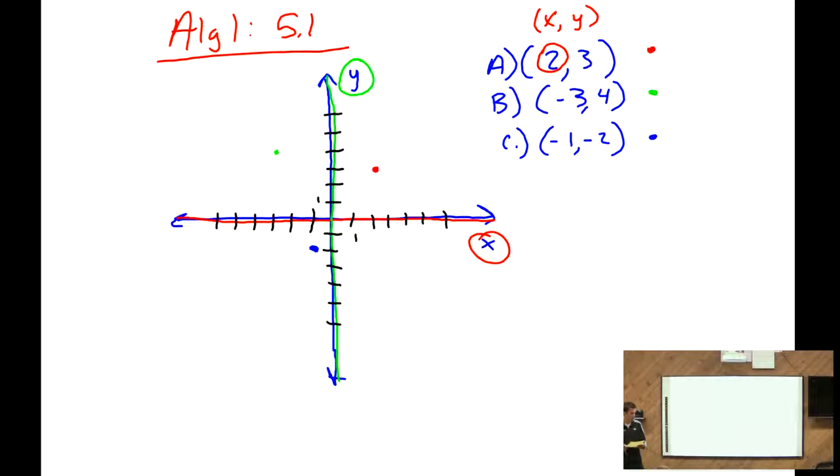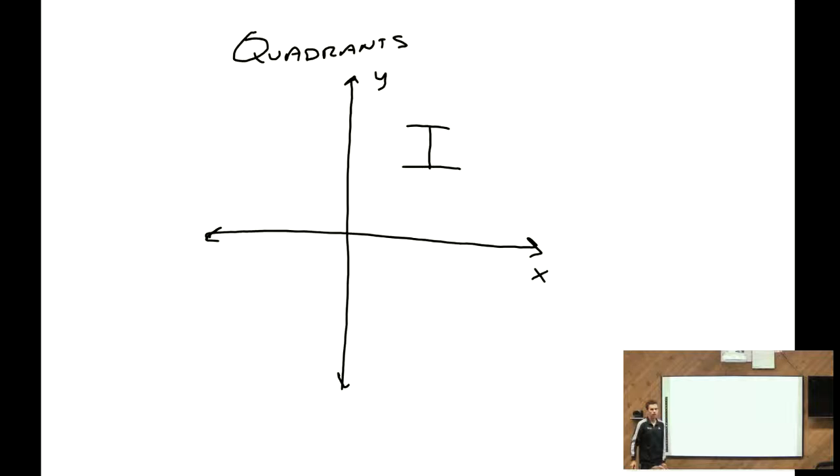Okay, then we also need to know the quadrants. This is something you just have to memorize. So we have our x-y plane. Quadrant number 1 is in the upper right-hand corner. And then we go counterclockwise. Quadrant number 2 is there. Quadrant number 3 is there. And quadrant number 4 is in the bottom right corner.